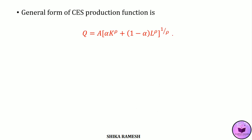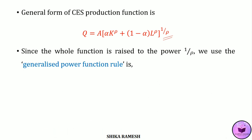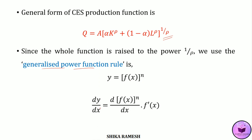Since the whole function is raised to the power 1 by rho, here we use the generalized power function rule. That is, if y is equal to f(x) the whole raised to n, then dy by dx will be the derivative of f(x) raised to n, which equals n times f(x) raised to n minus 1, multiplied by f'(x). In the first term we use the power rule, and in the second term we differentiate f(x) with respect to x.